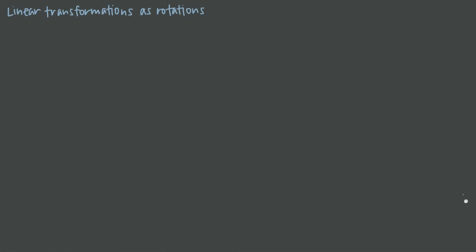We won't go into too much detail here about how to find these, but when we're in R2 space, our rotation matrix — the transformation matrix that expresses the rotation for some angle theta — we can always use this matrix: cosine of theta, negative sine of theta, sine of theta, and cosine of theta.